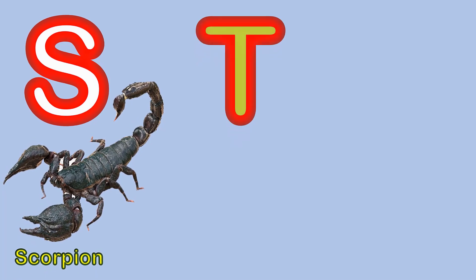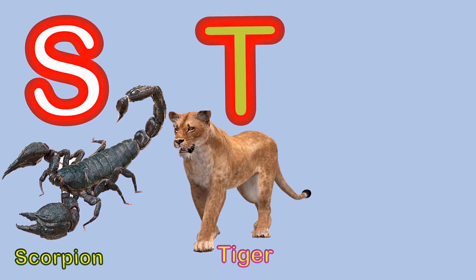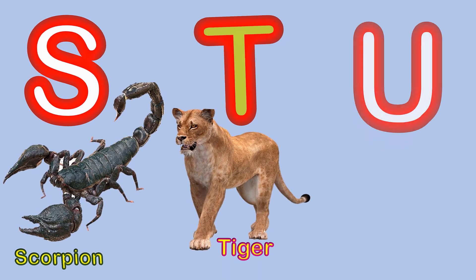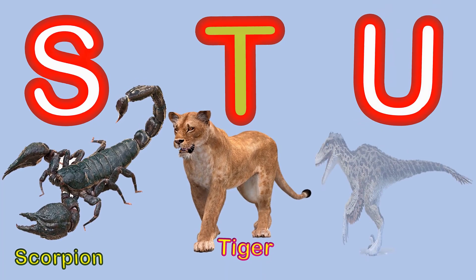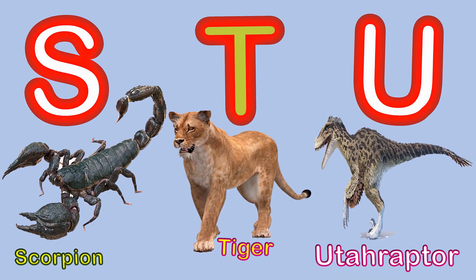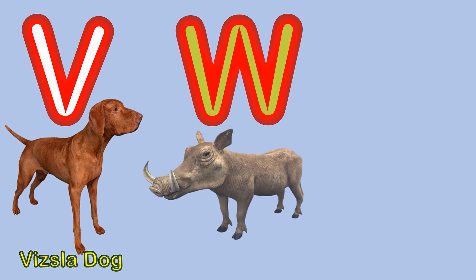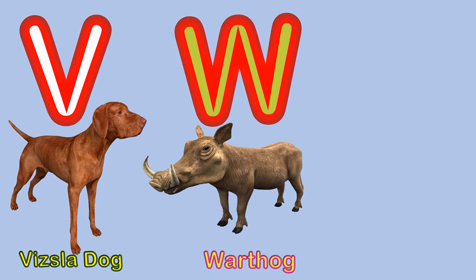S for scorpion, T for tiger, U for Utahraptor, V for vulture, W for warthog.